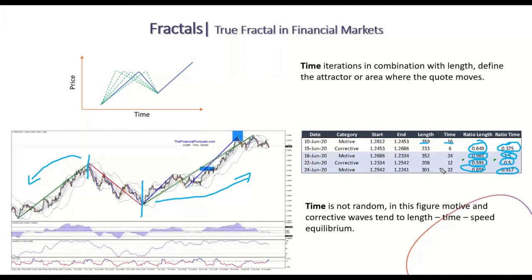That's telling us that time is not random. When we have a motive wave, the way that this motive wave is built—in length, in time, and also in speed—and something we are not showing here will connect with the corrective wave.